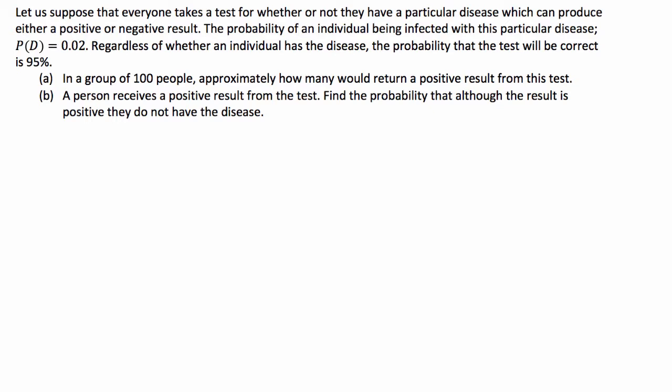The probability of an individual being infected with this particular disease is 2%. Regardless of whether the individual has the disease, the probability the test will be correct is 95%. We're asked, in a group of 100 people, approximately how many would return a positive result from this test, and if a person receives a positive result from the test, find the probability that although the result is positive, they do not in fact have the disease.